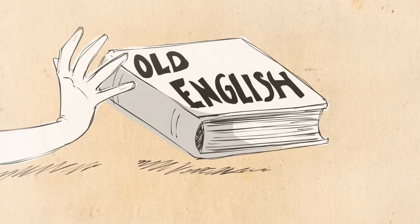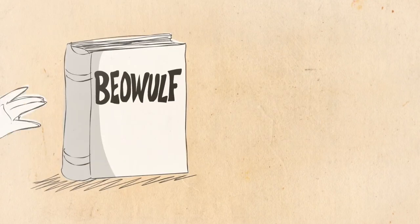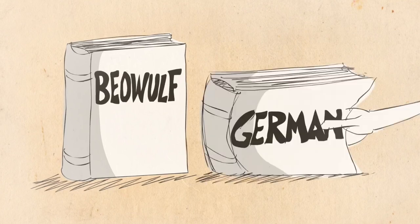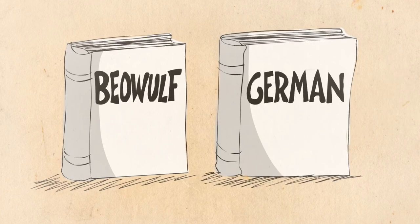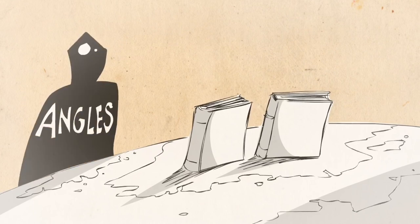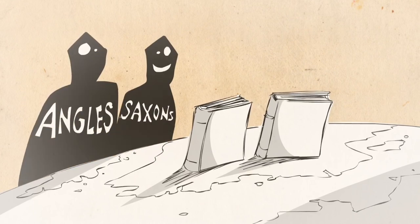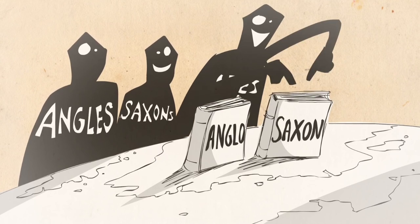Old English is the language of Beowulf. It probably doesn't look very familiar, but it might be more recognizable if you know some German. That's because Old English belongs to the Germanic language family, first brought to the British Isles in the 5th and 6th centuries by the Angles, Saxons, and Jutes. The Germanic dialects they spoke would become known as Anglo-Saxon.